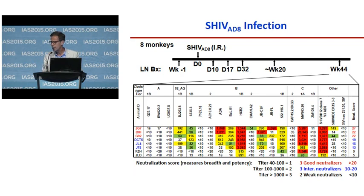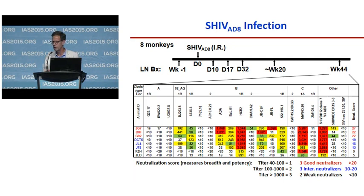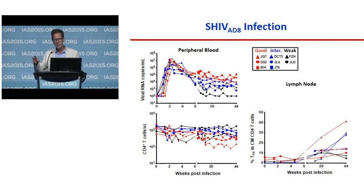Looking at envelope-specific B cells in the peripheral blood, we did not see a correlation with neutralization score. However, germinal center envelope-specific B cells correlated extremely well with neutralization score — the better the germinal center reaction and envelope-specific B cells generated there, the better the neutralization in serum. For T follicular helper cells, we looked at envelope-specific Tfh cells in the lymph node identified by mobilization of CD154. We saw a reasonable correlation, and an even better one using the Tfh-specific cytokine IL-4.